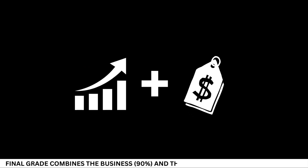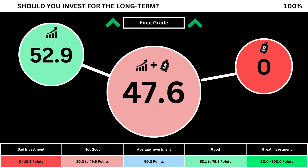Finally, we can put everything together to get the company's final grade. Adding the business grade and the fair price grade, we can see here the company's final grade. Anything less than 50 means it's not a good long-term investment. A final grade above 50 means it would make a good long-term investment if you bought the stock right now.